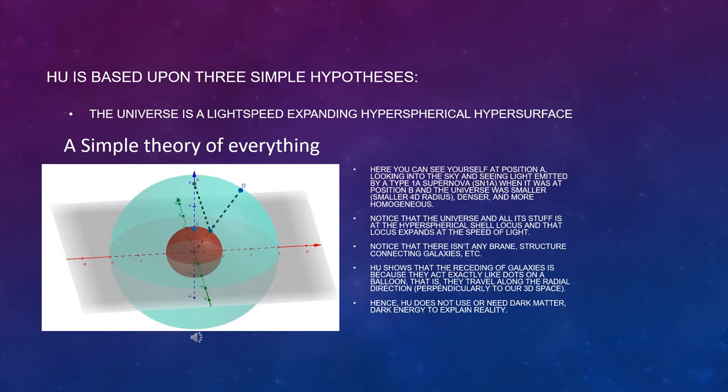The hypergeometrical universe theory contains three hypotheses. The universe is a light-speed expanding hyperspherical hypersurface.